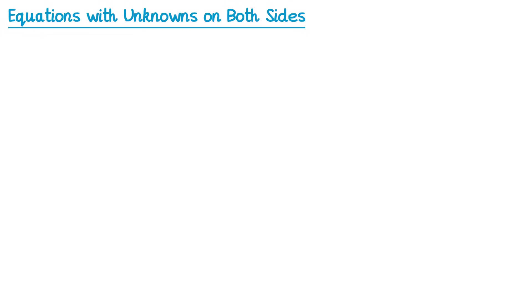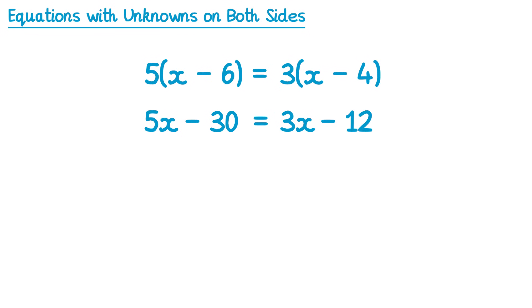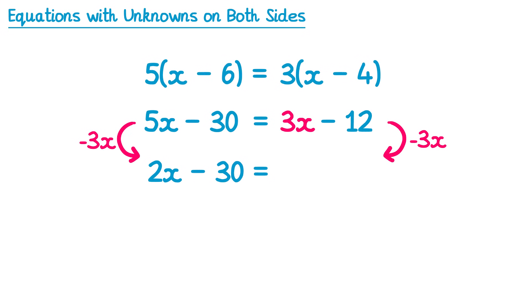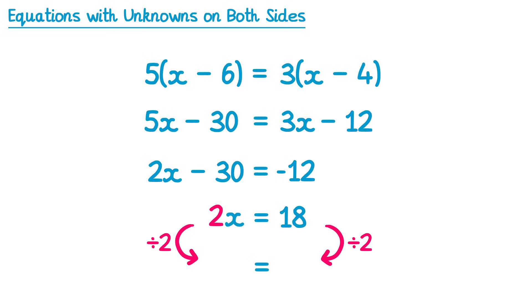And now we'll look at one final example. This equation is similar apart from there are brackets as well. We're going to start by expanding out the brackets on both sides. On the left-hand side, 5 lots of x is 5x, and 5 lots of negative 6 is negative 30. On the right-hand side, 3 lots of x is 3x, and 3 lots of negative 4 is negative 12. From here we can solve like we have done in the previous examples. We'll eliminate this 3x by subtracting 3x from both sides: on the left-hand side 5x subtract 3x is 2x, with subtract 30 remaining, and the 3x's cancel leaving negative 12 on the right. Then we add 30 to both sides: the 30s cancel leaving 2x, and negative 12 plus 30 is positive 18. Finally, we divide by 2 on both sides: 2x divided by 2 is 1x, and 18 divided by 2 is 9. So the solution is x equals 9. If you have an equation with brackets on both sides, just expand the brackets first and then continue as normal.